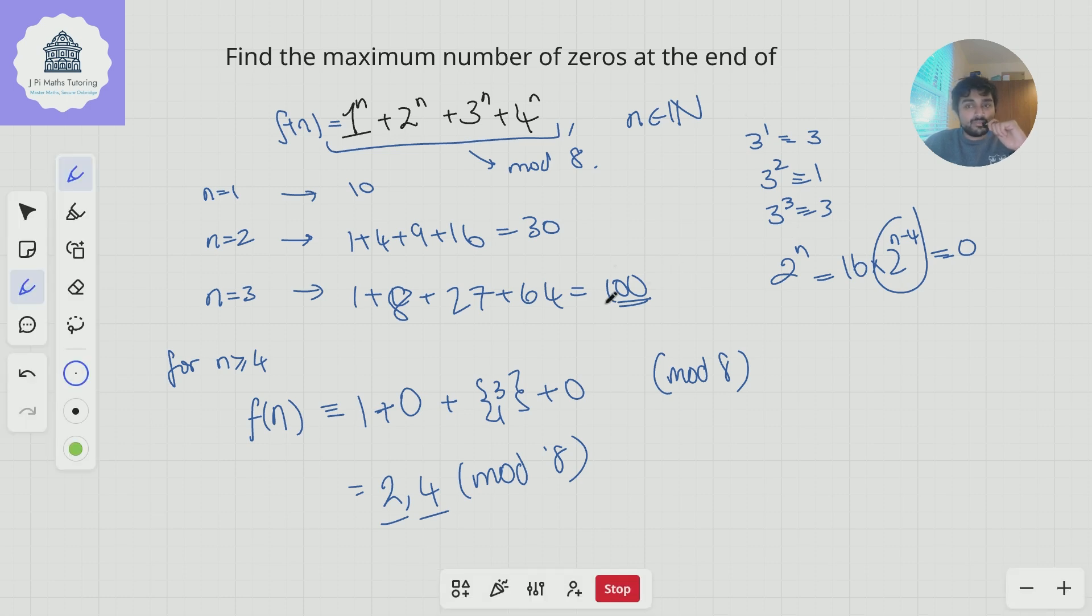So we can only ever get 2 zeros from n=3. There may be other values of n where this ends in 2 zeros, but we can't get 3 zeros. And that solves our problem.